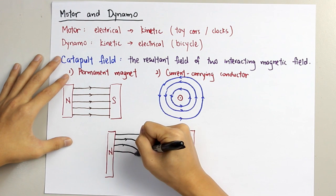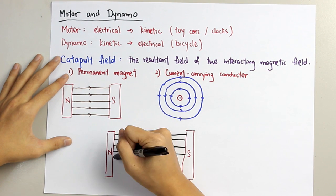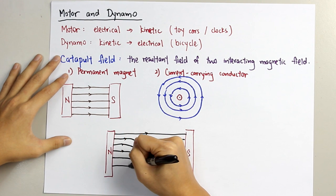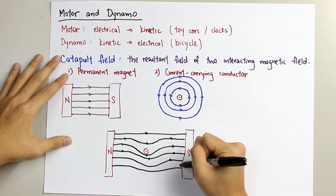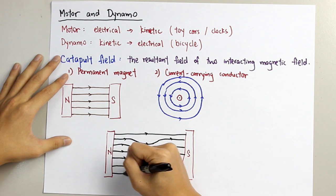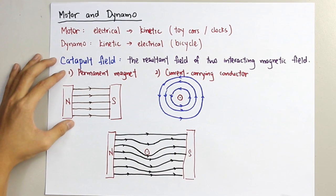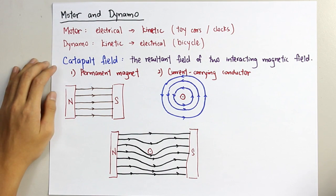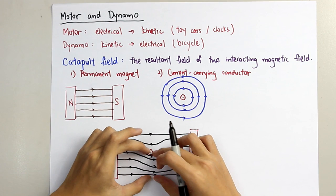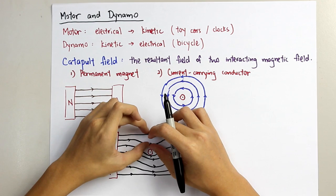The same applies — the further it is from the wire, the lesser the effect. So at this point, it will not be affected by the wire at all.